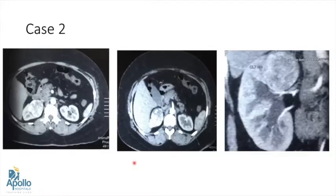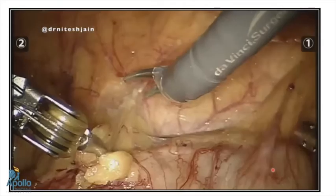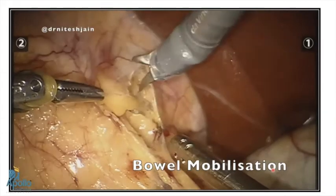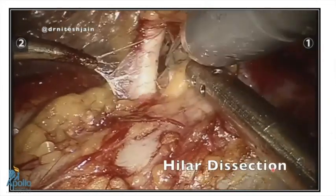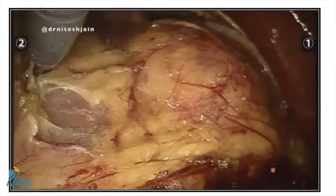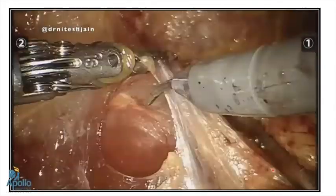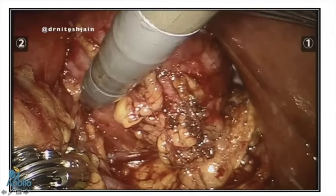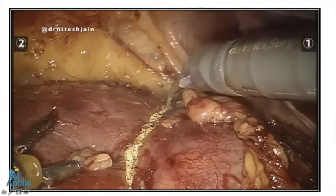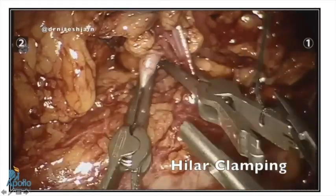The next case is a large 4.4 cm upper pole tumor lying close to the hilar vessels. Surgery begins with mobilization of the colon, which is mobilized adequately all around. The peritoneum over the kidney is cut using sharp and blunt dissection, and the hilar vessels are individually dissected. Since this is a very endophytic tumor, a drop-in ultrasound is really useful. We can see the tumor entering the hilum, so the kidney must be completely mobilized.